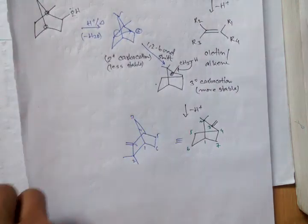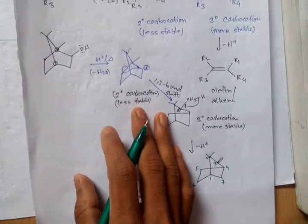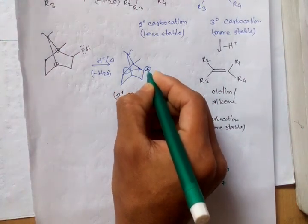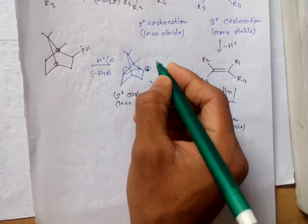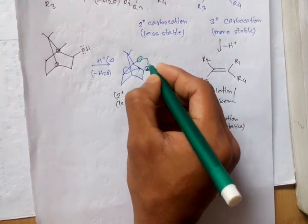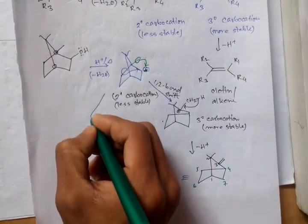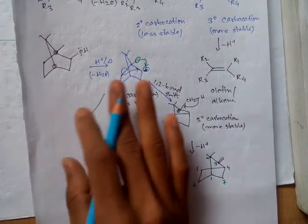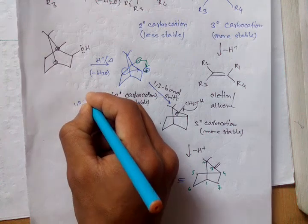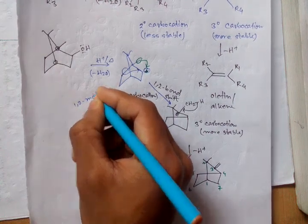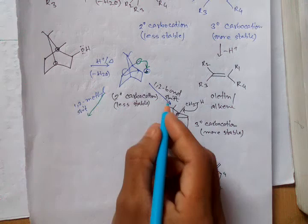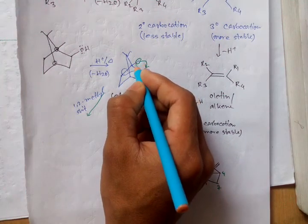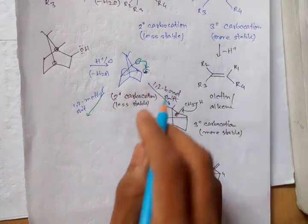And another possibility of this reaction, to stabilize this carbocation, when this methyl comes here, then what happens? So when 1, 2 methyl shift, here 1, 2 bond shift, this bond shift, but if it is 1, 2 methyl shift, then what happens?